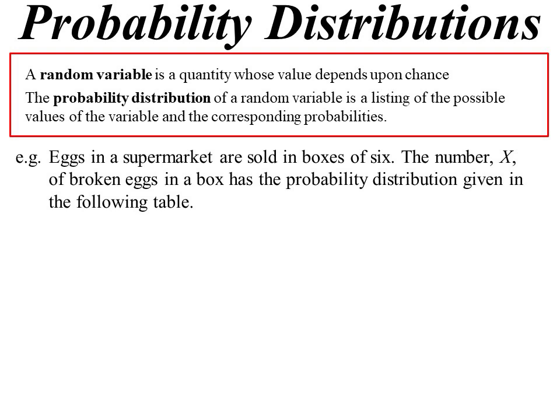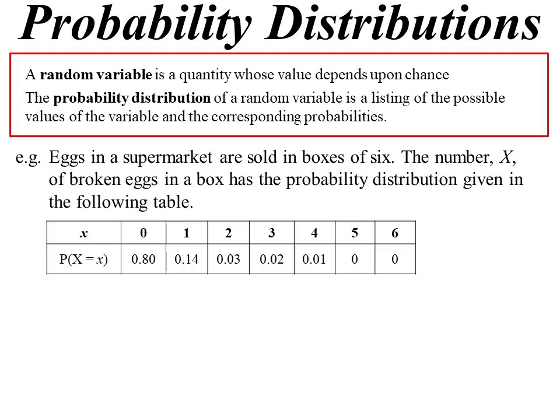My random variable is defined as the number of broken eggs in a box. Hopefully that number will be zero. Here's the probability distribution: there's no chance of six or five broken eggs. There's a very small probability that four might be broken, down to a larger probability that they're all good. That is our probability distribution.